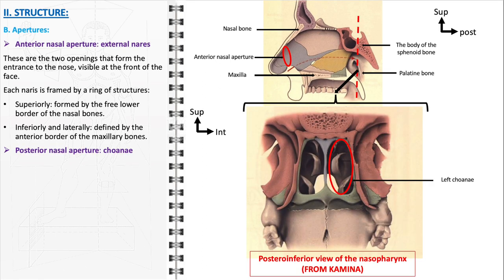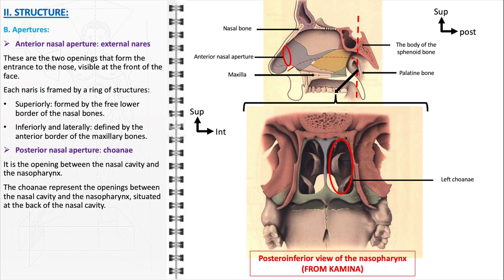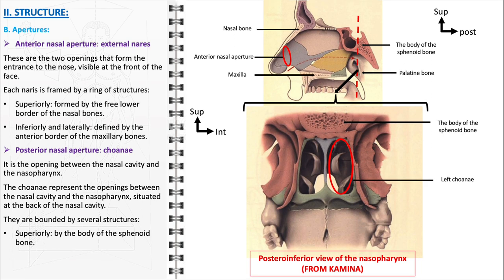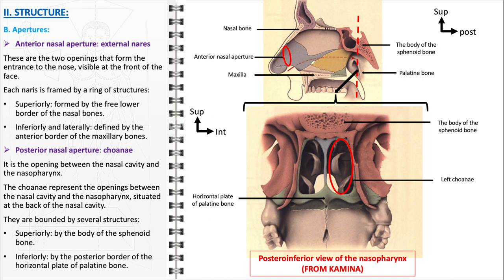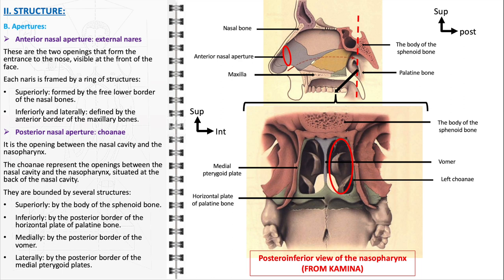The posterior nasal aperture, commonly referred to as choanae, are crucial openings located at the back of the nasal cavity, marking the transition between the nasal cavity and the nasopharynx. They are bounded by several anatomical structures: superiorly by the body of the sphenoid bone, inferiorly by the posterior border of the horizontal plate of the palatine bone, medially by the posterior border of the vomer, and laterally by the posterior border of the medial pterygoid plates. These apertures are essential for the continuous flow of air from the nasal cavity to the respiratory tract, with the posterior apertures ensuring a smooth transition into the lower parts of the respiratory tract.